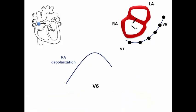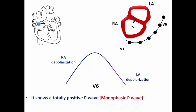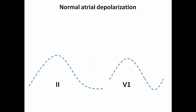In V6, right atrial depolarization shows a positive P wave and left atrial depolarization follows as a continuation. Both move toward the positive pole of V6, so V6 shows a monophasic positive P wave — no biphasic morphology as in V1. In summary, in lead 2 the P wave is positive and monophasic; in V1 it is usually biphasic with positive and negative components.